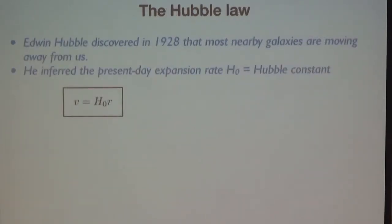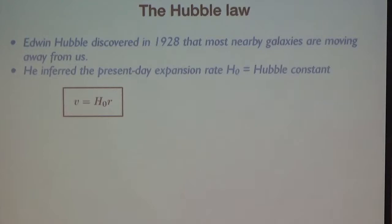Using this simple relation, that's how Edwin Hubble discovered that the universe expands. He observed that most nearby galaxies are moving away from us, and from this measurement he inferred the present-day expansion rate, which is known as the Hubble constant H₀.